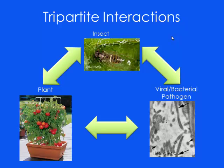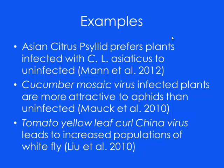We're generally worried about the insect giving the pathogen and putting it in the plant, and the insect taking it up from the plant — all these ways they can interact. One of the more important examples is that Asian citrus psyllid has been examined, and what they found is that ACP actually prefers to go to infected plants relative to uninfected ones. If they have a choice of a citrus tree that has HLB or not, they will go to the HLB-infected tree. Similar things happen with cucumber mosaic virus, tomato leaf curl, and yellow leaf curl China virus. In all these cases, infection with the pathogen changes the vector's behavior.